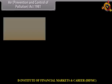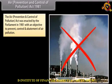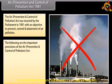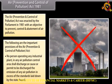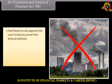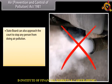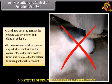Air Prevention and Control of Pollution Act, 1981. The Act was enacted by Parliament in 1981 with an objective to prevent, control, and abatement of air pollution. No person operating any industrial plant in any air pollution control area shall discharge or cause to be discharged the emission of any air pollutant in excess of the standards laid down by the State Board. The State Board can also approach the court to stop any person from causing air pollution. No person can establish or operate any industrial plant without the consent of the State Pollution Control Board.